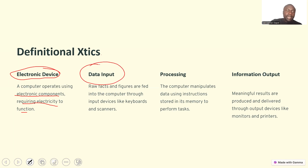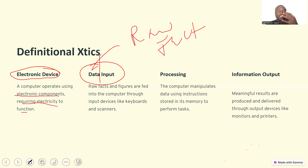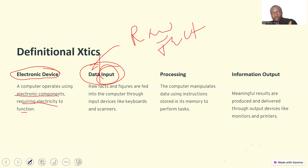The computer takes in data as input. Data simply means raw facts — a fact that has not undergone processing. That raw fact is fed into the computer, and the act of feeding this raw fact into the computer is called input. Input devices help collect or take in these raw facts.